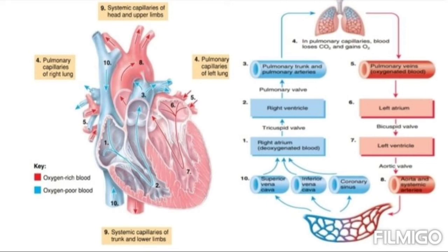The pulmonary veins carry now-oxygenated blood from the lungs back to the left atrium. From the left atrium, blood moves to the left ventricle through the bicuspid valve — the right side has the tricuspid valve, and the left side has the bicuspid valve. From the left ventricle, through the aortic valve, blood moves to the aorta and into the systemic capillaries, then returns through the superior vena cava, inferior vena cava, and the coronary sinus.